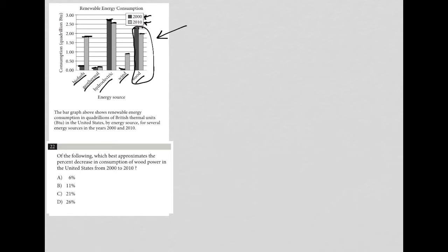In the United States from 2000 to 2010. Well, if we're looking at wood, then for 2000, the number looks like it was at 2.25. But for 2010, the number looks like it is at 2. So it looks like this question is just asking, what's the percent decrease represented by going down from 2.25 to 2?